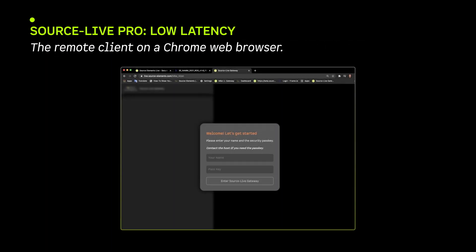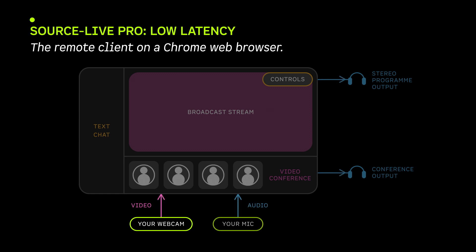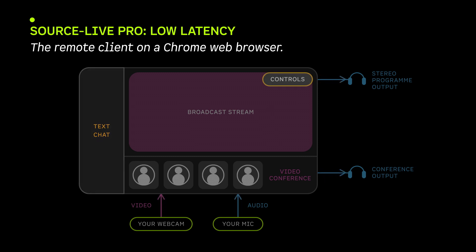At the remote end, clients are sent a simple secure web link to take them to the studio's gateway. Clients enter their name, select their webcam, microphone and audio output for the video conference. There is a text chat facility on the left-hand side of the browser screen, and on the top right are the controls of the broadcast stream where you can set the stream's audio output.